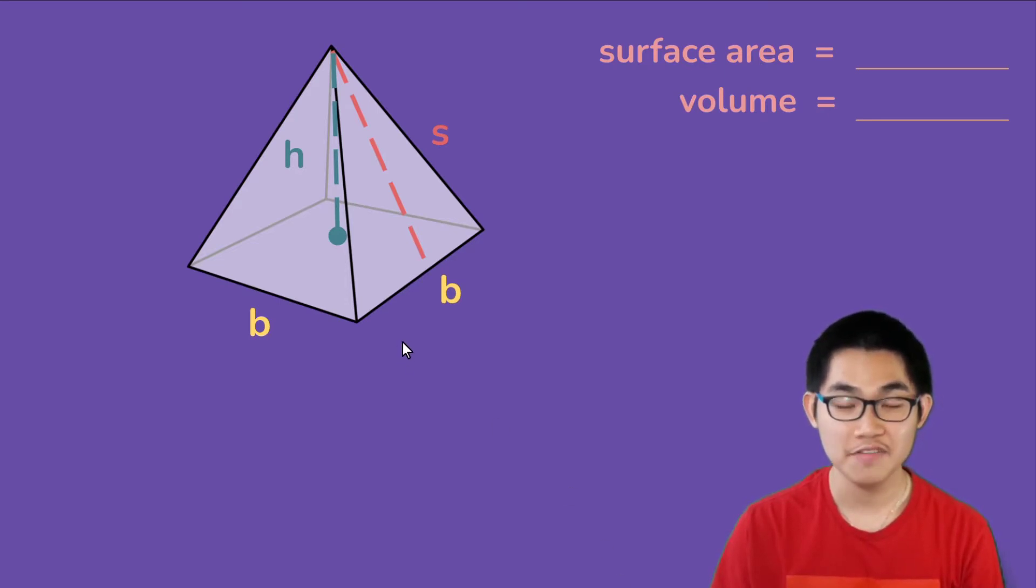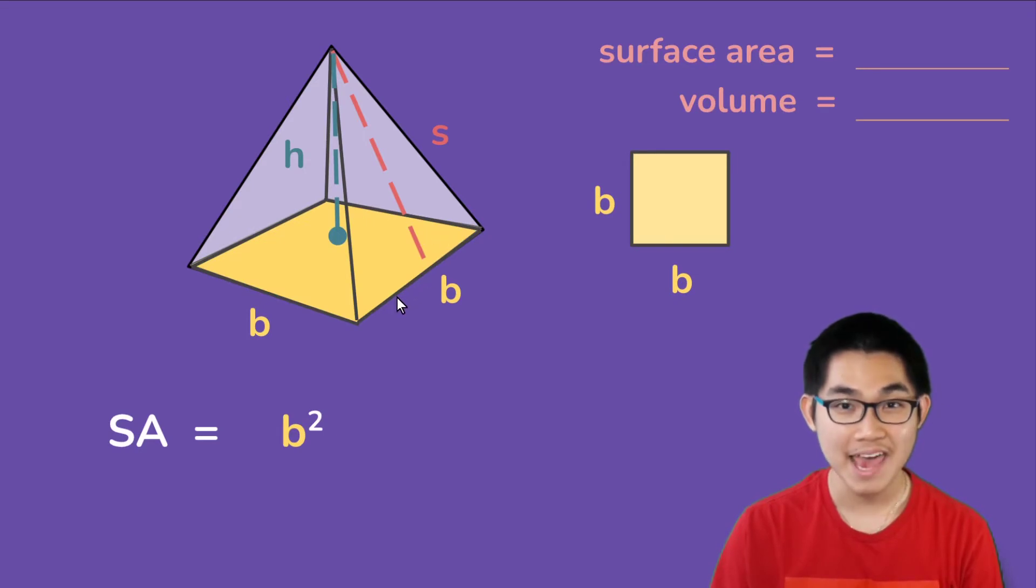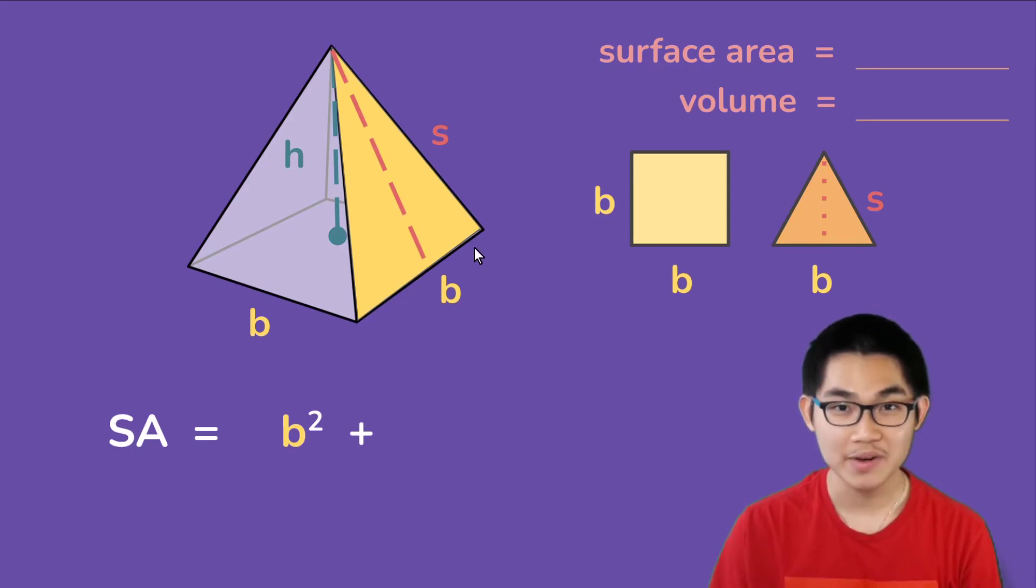To find the surface area we need to find the area of the base which is a square, and the area of a square is b to the power of 2. We also need to find the area of each side of the pyramid which is a triangle, and so the base of the triangle is b and the height of the triangle is s or the slant height.